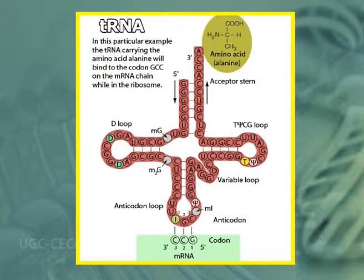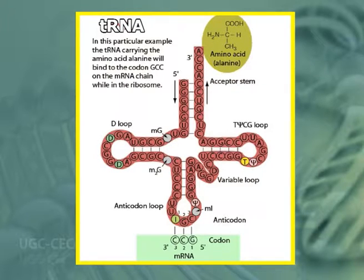Another arm of tRNA is the D arm, named due to the presence of dihydrouridine. Another arm is the T-psi-C arm, which contains the sequence thymine-pseudouridine-cytosine. Another arm is the variable arm, so named because it is the most variable region in tRNA.